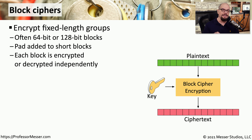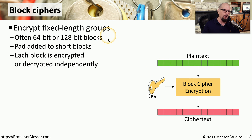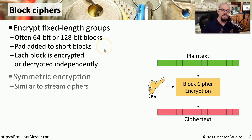As the name implies, a block cipher is encrypting a fixed length block of information at a time. Instead of taking a single byte, it will take a block of bytes and encrypt that entire block at one time. We usually see this with 64-bit or 128-bit blocks. If the input doesn't match 64 or 128 bits, we'll often add padding to fill in any of those short blocks. Like stream ciphers, block ciphers also commonly use symmetric encryption so that they can encrypt as quickly as possible with a minimum of overhead.